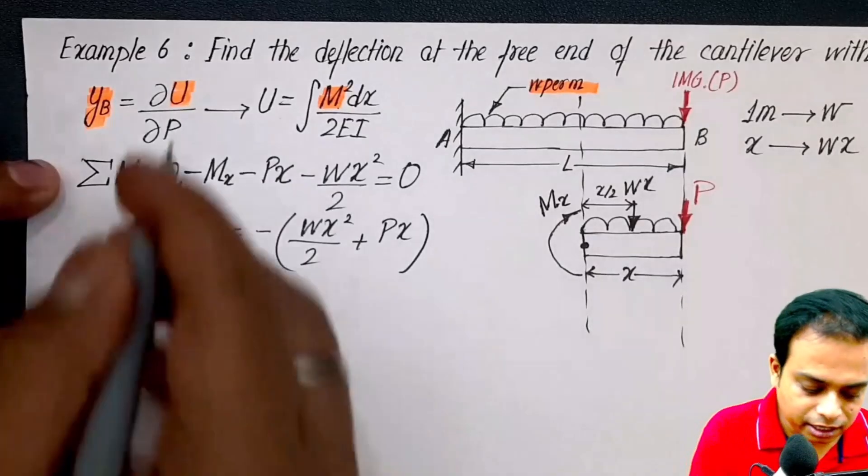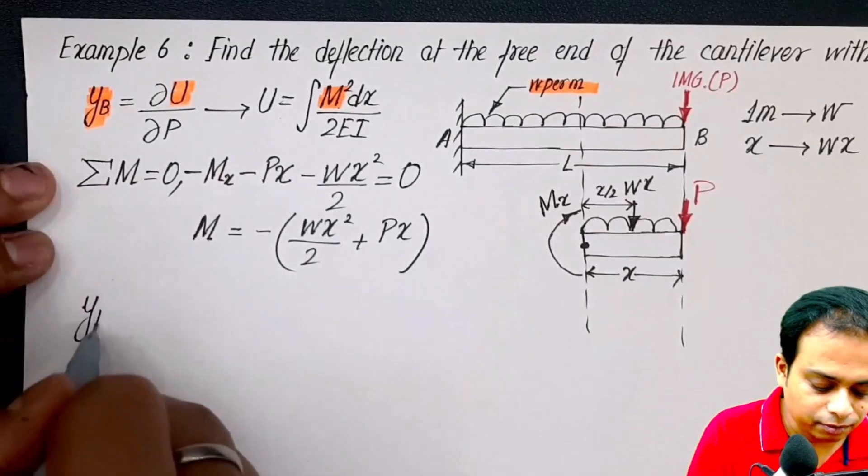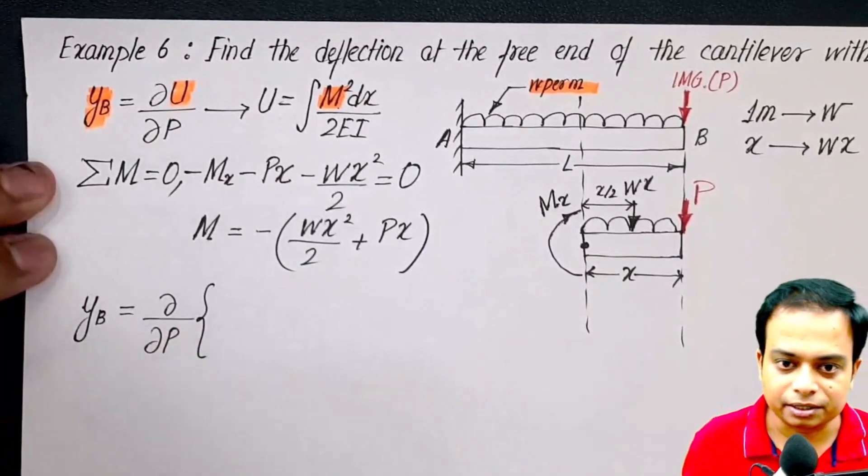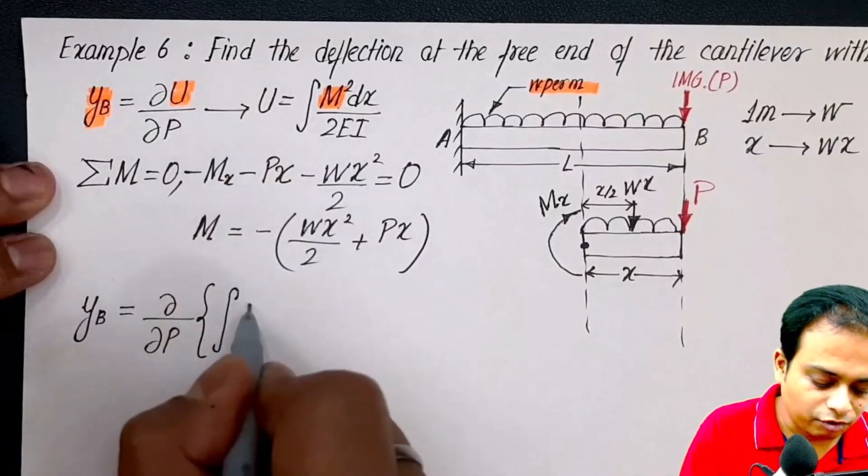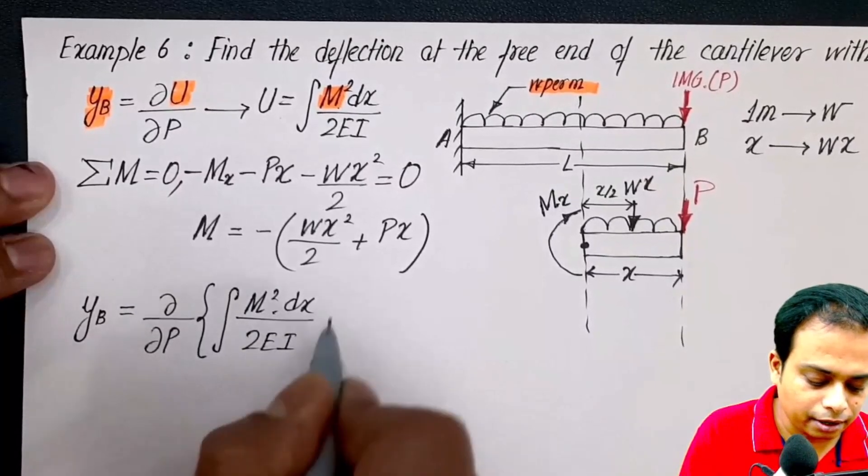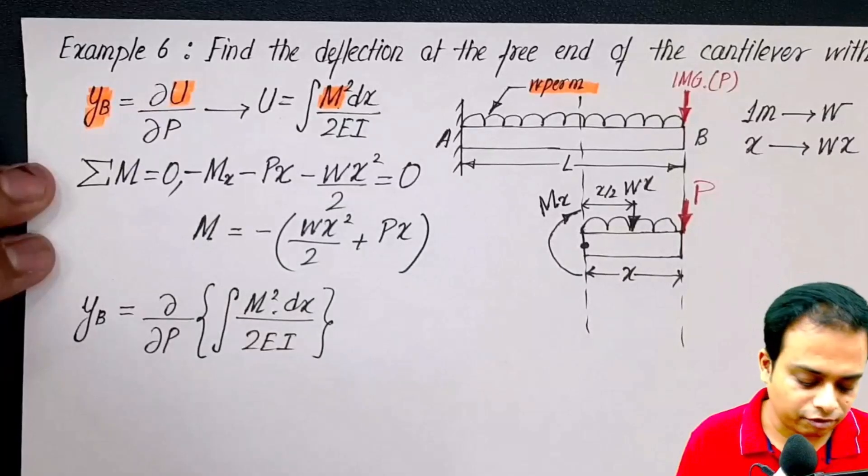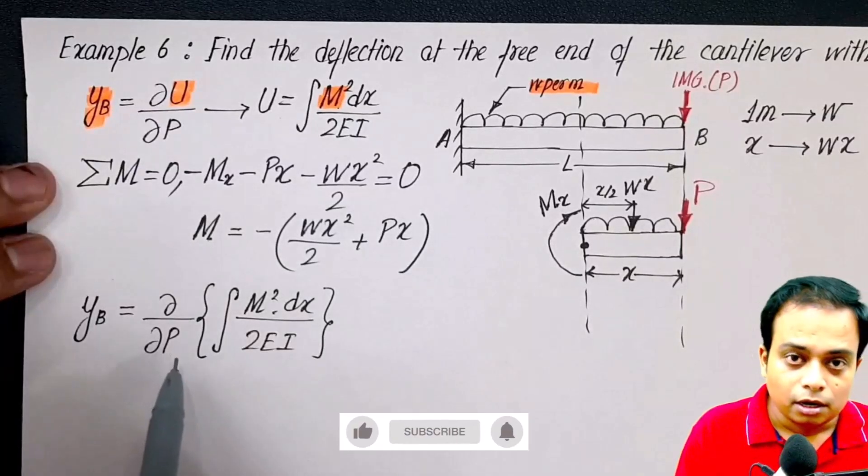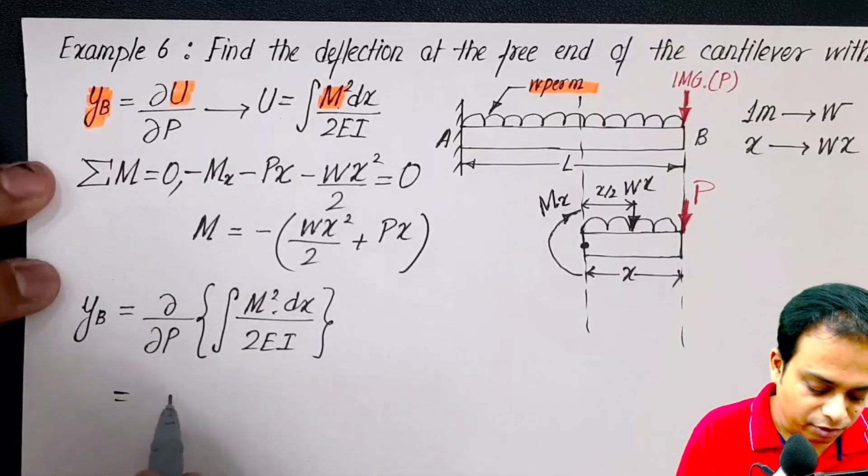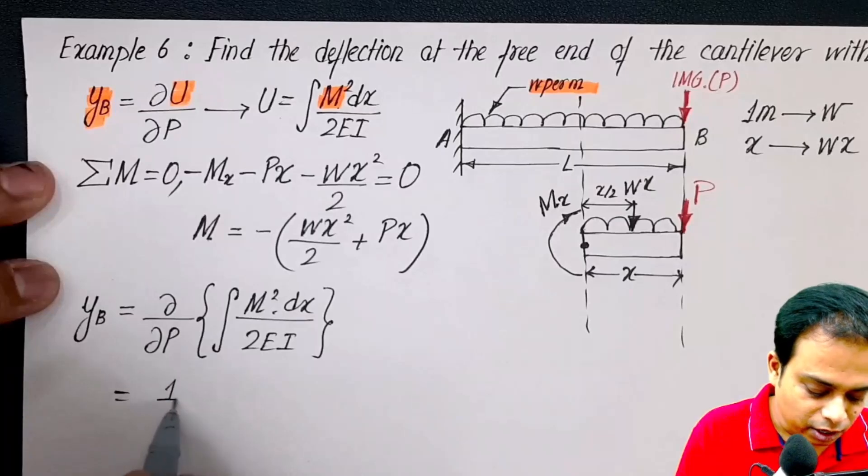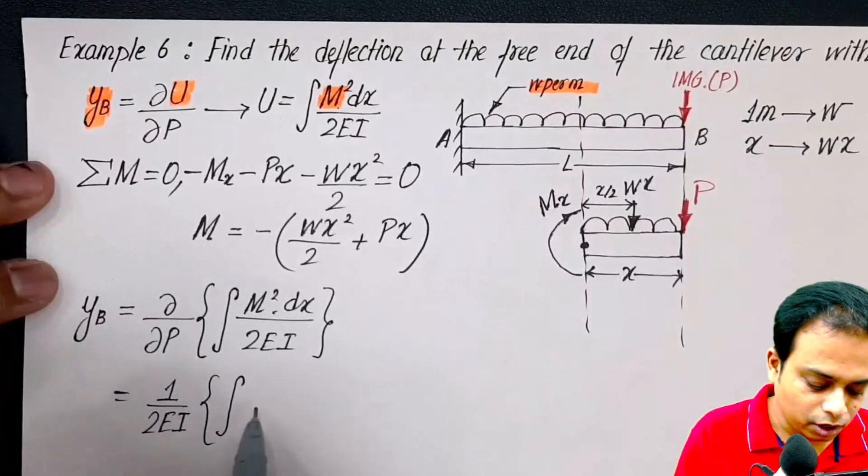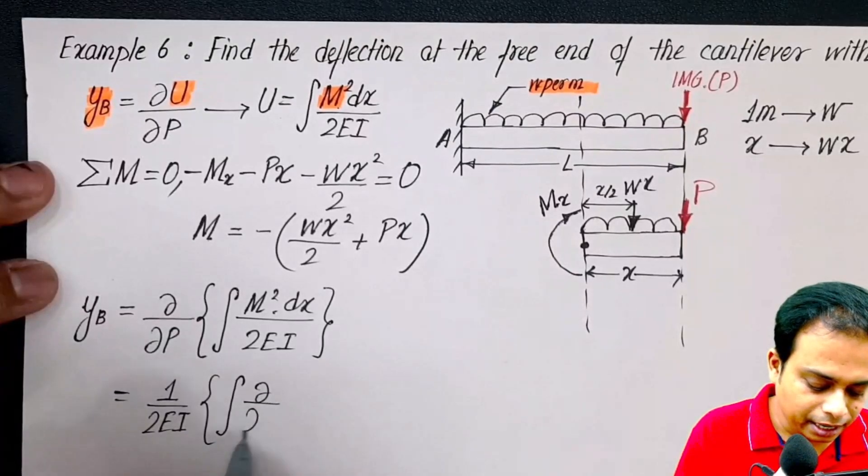Let's say we straight away wanted deflection yb is equal to del over del p of the strain energy. Now this strain energy is integral of m square dx over 2EI. This is very interesting, super stuff. Now we've got to apply the chain rule. We'll take this partial derivative inside the integral. This is going to be fun. Let me take this one over 2EI outside, and inside the integral you've got del by del p of m square.